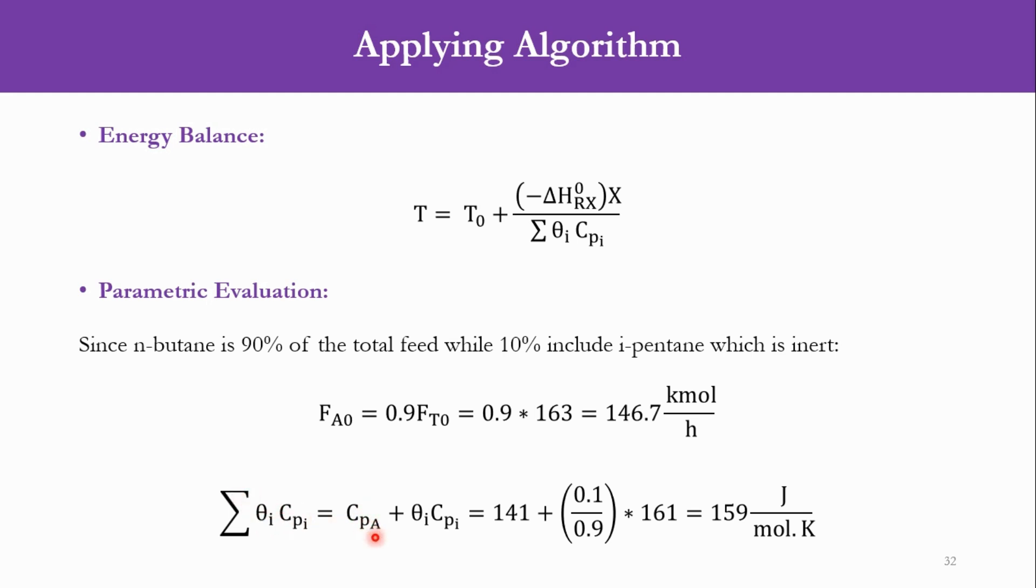Now to calculate that summation θi×Cpi, which is an important parameter here. That Σθi×Cpi = Cp_A plus θi×Cpi. It represents the other quantities in the system. In our case today, there are only two quantities, butane and pentane. But if you have more quantities, it can be accommodated like that. For example, Cp of normal butane is 141 as given to us. For pentane, it is 161, also given to us. How we can calculate theta? It is fraction of that quantity divided by fraction of the limiting reactant. The mole fraction of the other quantity, which is isopentane, is 0.1, while that of the limiting reactant, which is n-butane, is 0.9. So 0.1/0.9 × 161. Once we calculate it, it comes out to be 159 Joules per mole per Kelvin.